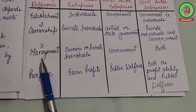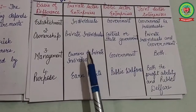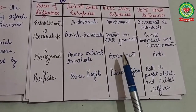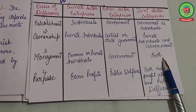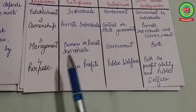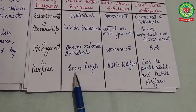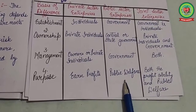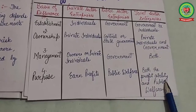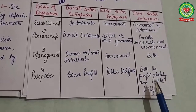The third difference is management: private sector enterprises are managed by professional managers or the owners, public sector enterprises are managed by the government, and joint sector enterprises are managed by both private individuals and the government. The fourth difference is purpose: private sector enterprises have the motive to earn profits, public sector enterprises aim to promote public welfare, and joint sector enterprises have both profit motive and public welfare motive.